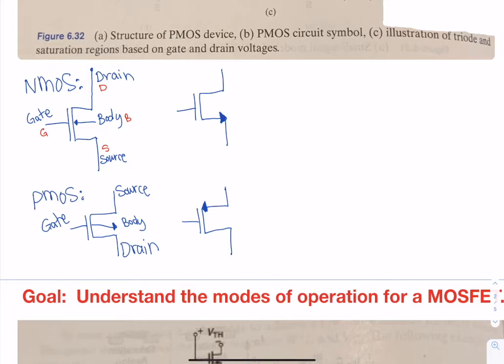Typically, the body is not drawn in there. If it's not drawn, you're going to assume that it will always be connected to the source side.